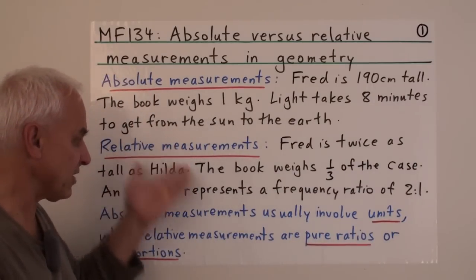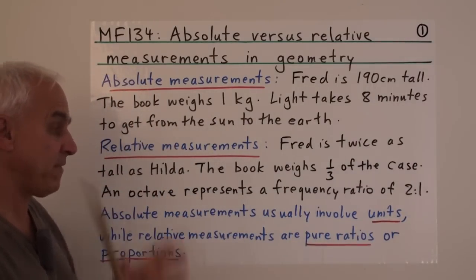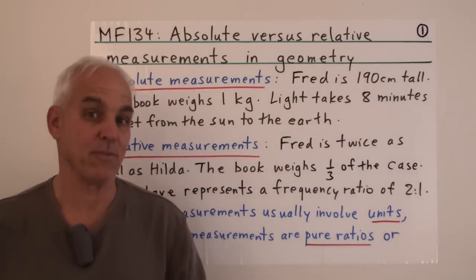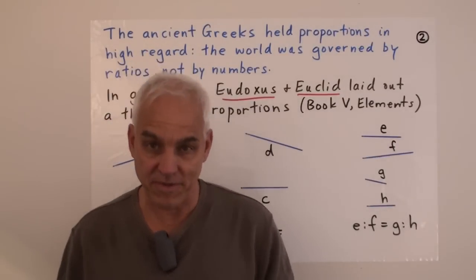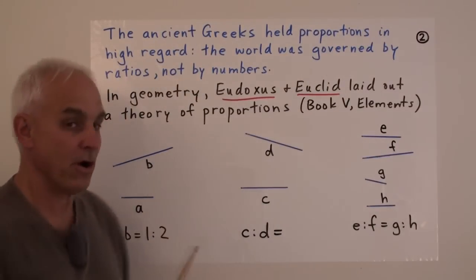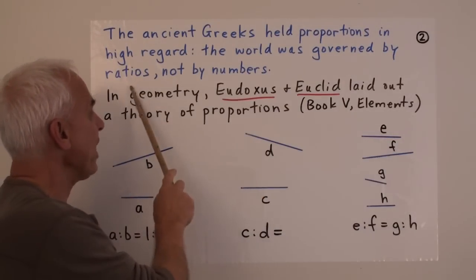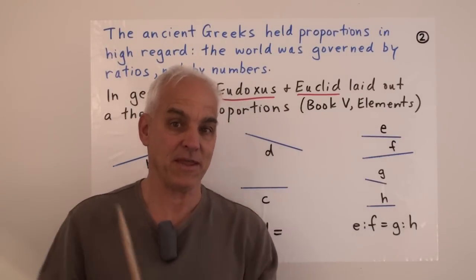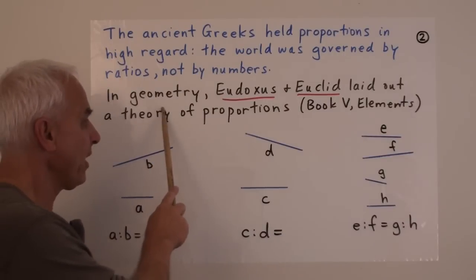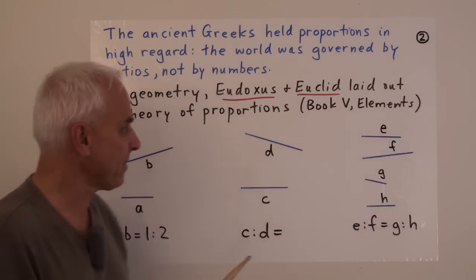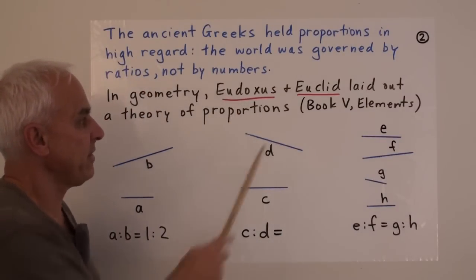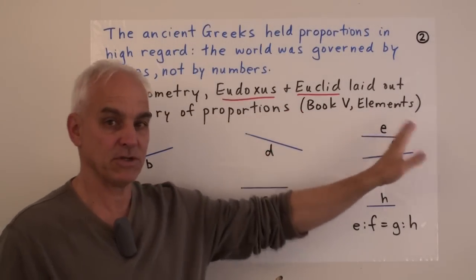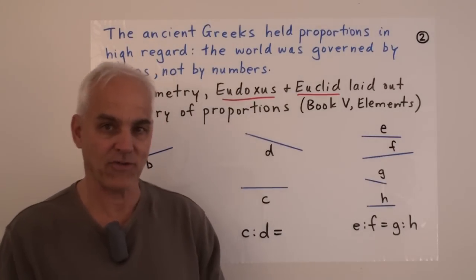These are very familiar distinctions between different ways of thinking about measuring in our ordinary world, but they have a lot of applications to mathematics too. The ancient Greeks, in particular the Pythagoreans, held proportions in high regard. For them, the world was governed by ratios, perhaps more than by numbers. The great mathematician Eudoxus, and then a little while later Euclid, laid out a theory of proportions, written up in Book 5 of the Elements — one of the most important and historically influential books.